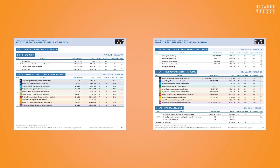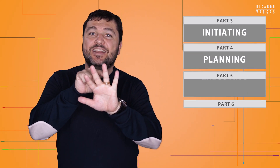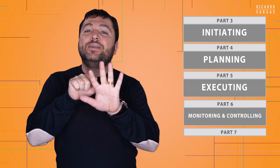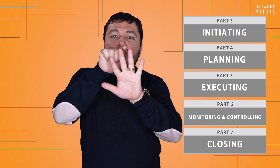After that, I will go through five chapters covering basically the five process groups: Initiation, Planning, Executing, Monitoring and Controlling, and Closing. I will teach you how the PMBOK process flows from the beginning to the end of the project, and I will teach you all 49 processes.